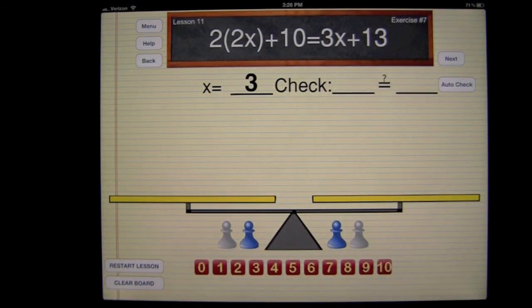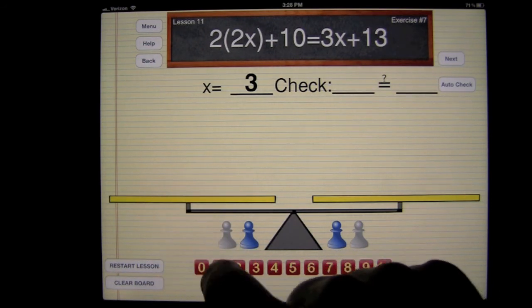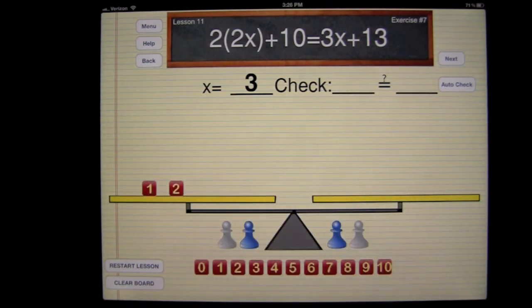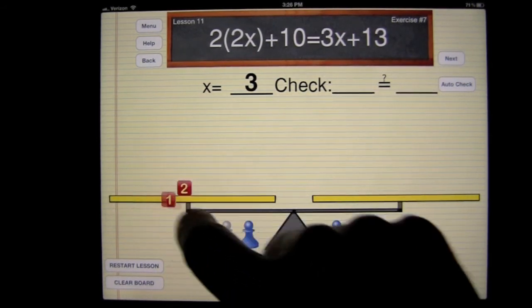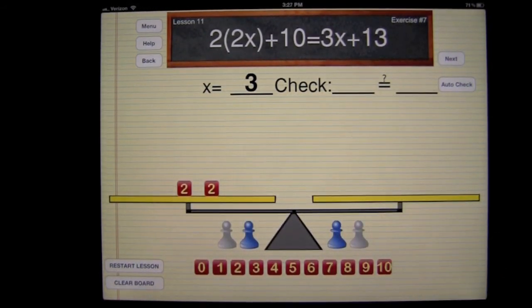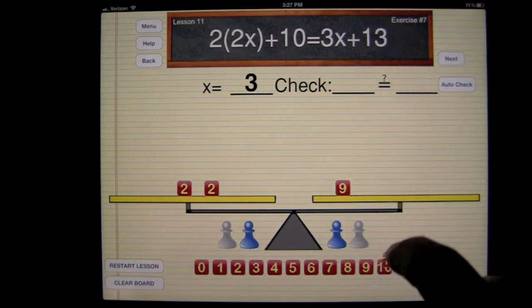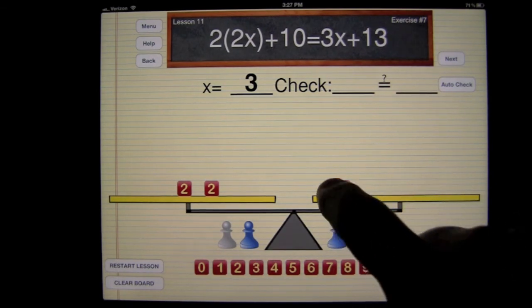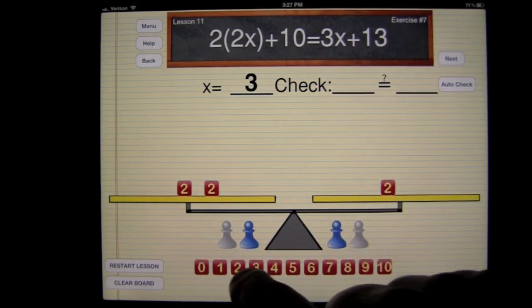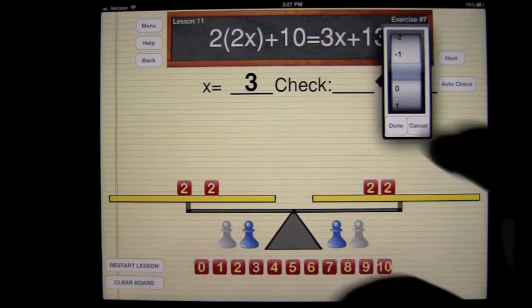So we will say 2 times 3 is 6 times 2 is 12. So we have 12 plus 10 is going to be 22. So we'll drag that off, leave the 2 up there, and put 22. And then we have 3 times 6 is 9. So we have 9 plus 13. And that's going to be 22 as well. So we'll put our 22 up there, get rid of the 9.